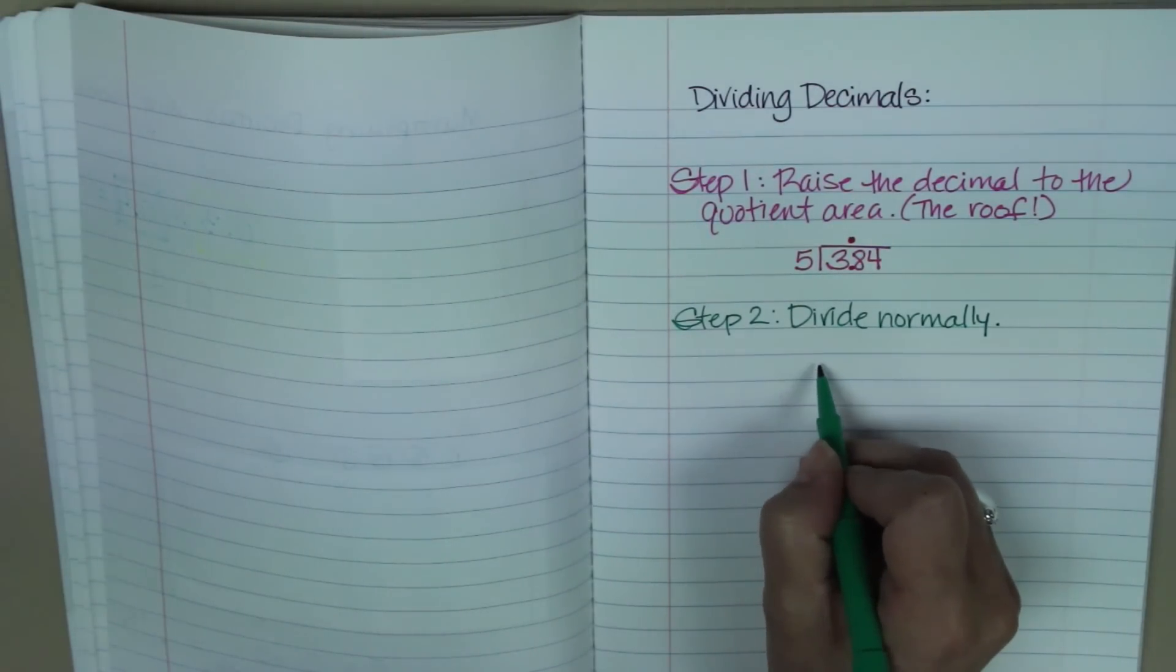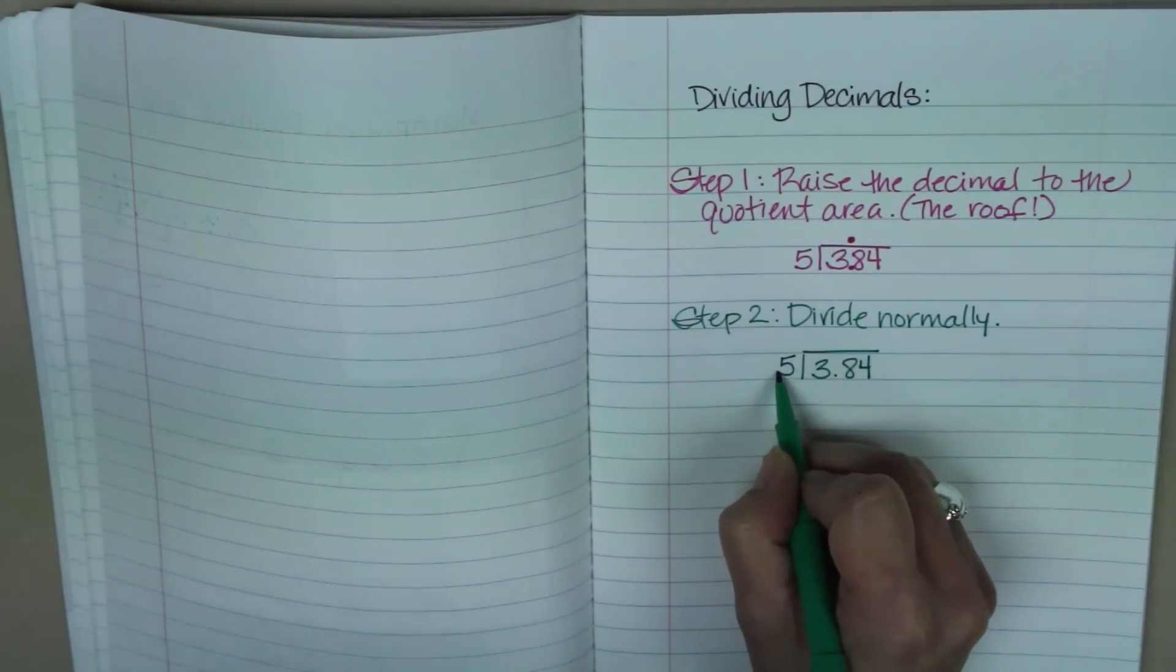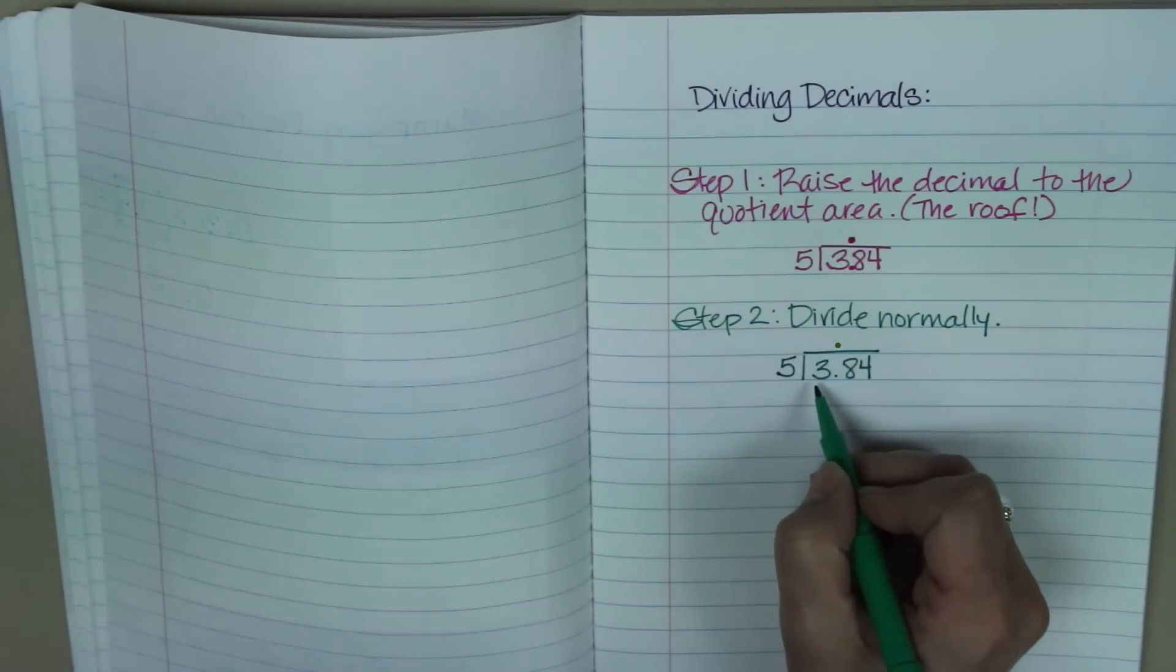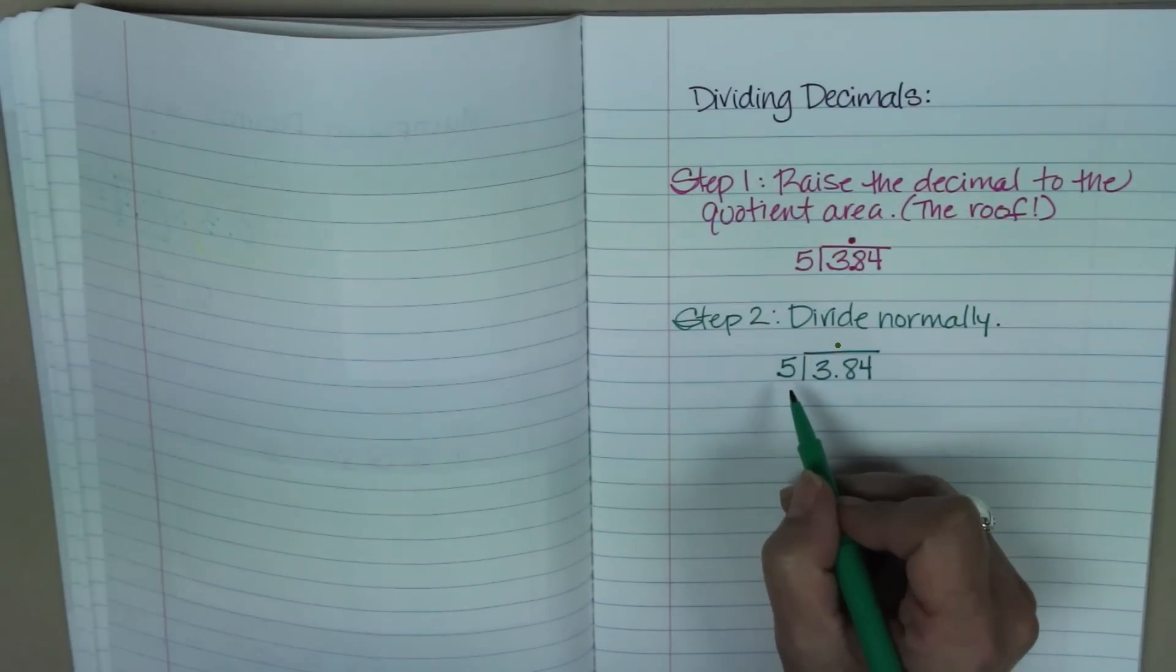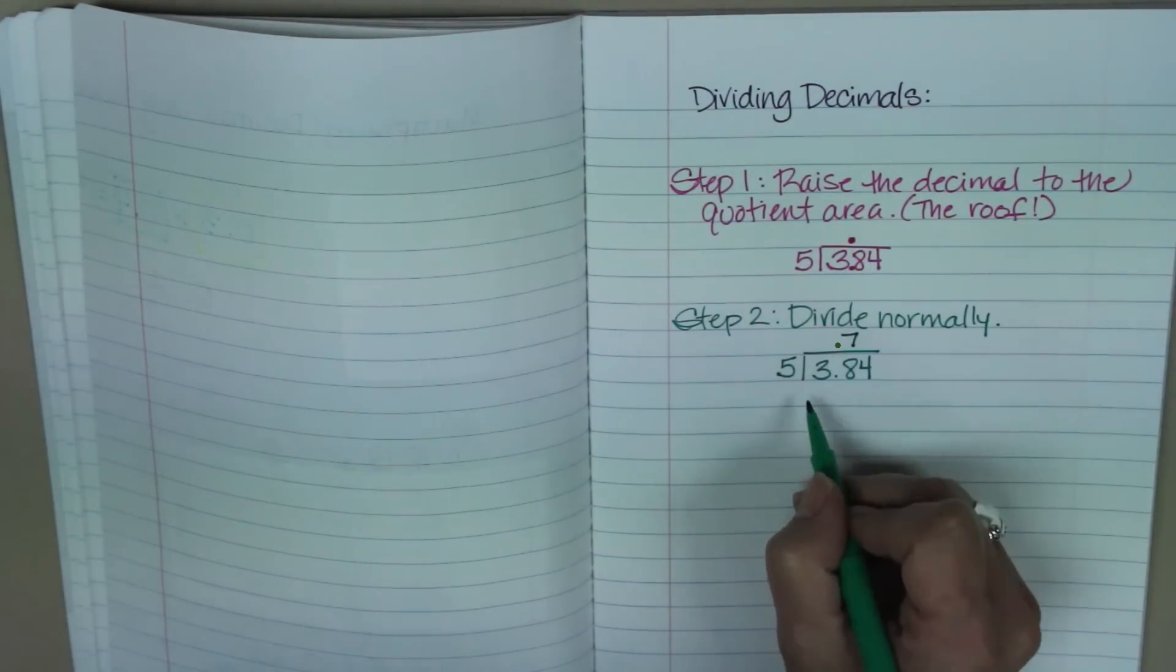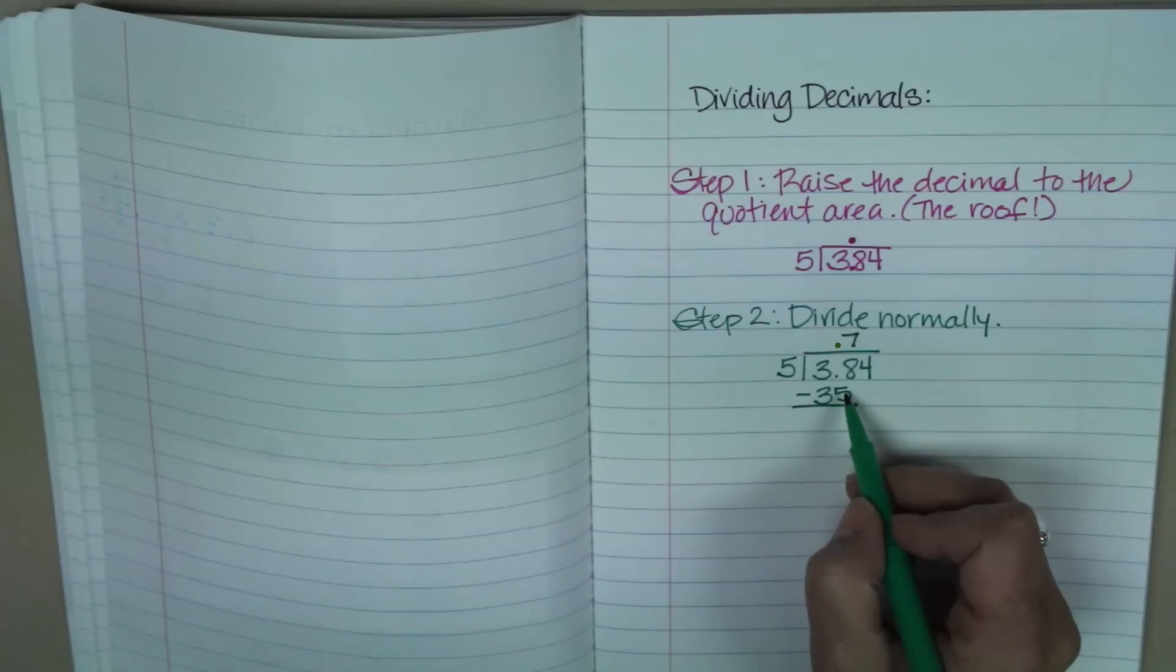So I have my 3 and 84 hundredths divided by 5. Okay, so I know that 5 does not go into 3, but it goes into 38. So I'm going to pretend like that's 38 and not 3 and 8 tenths. And I know that 5 can go into 38 seven times, because 7 times 5 is 35, and I'm going to subtract. So I'm just doing this like I normally would. And then I have 8 minus 5, which is 3.